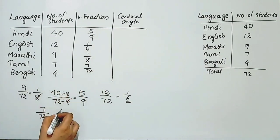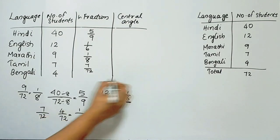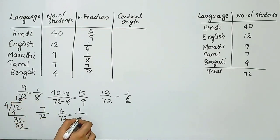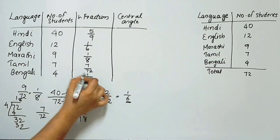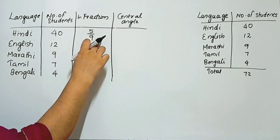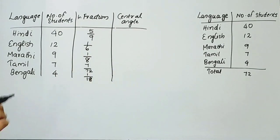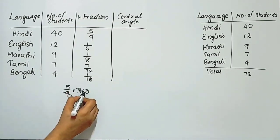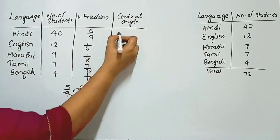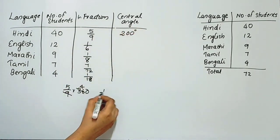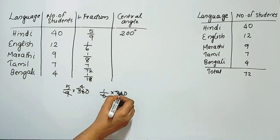For Bengali: 4 by 72. Since 4 and 72 share a common factor, the fraction simplifies to 1 by 18. The fraction is 1 by 18, which is the simplest form.